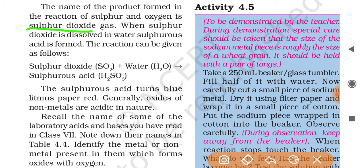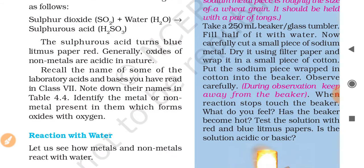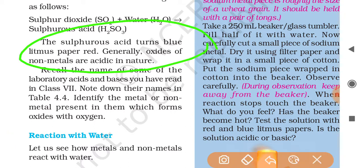When sulfur dioxide is dissolved in water, sulfurous acid is formed. The reaction can be given as follows: sulfur dioxide reacts with water and it will form sulfurous acid. The sulfurous acid turns blue litmus paper red. Generally, oxides of non-metals are acidic in nature. So you can easily identify by this process that oxides of non-metals are acidic in nature.